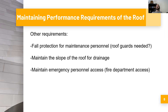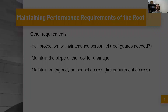We also want to talk about maintaining the performance requirements of the roof. We're going to discuss a few things: fall protection for maintenance personnel and the question of whether roof guards may be needed; maintaining the slope of the roof for drainage, because even low slope roofs have a minimum slope for drainage; and maintaining emergency personnel access. When you put a new solar panel system onto the roof, you need to consider the access requirements for emergency personnel that must be maintained, as filling a roof with solar panels may compromise the ability for emergency access where needed.